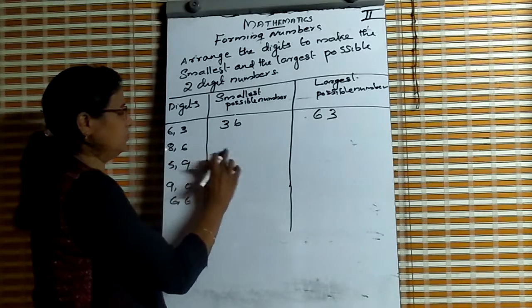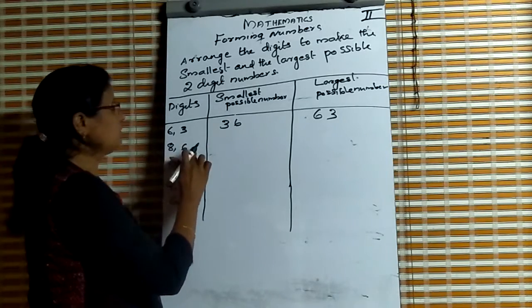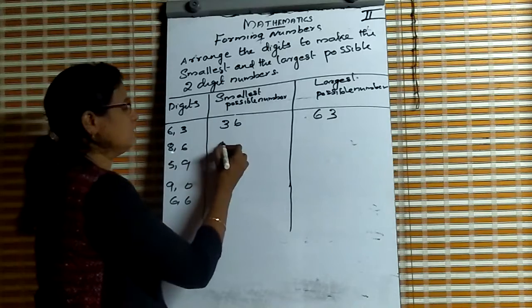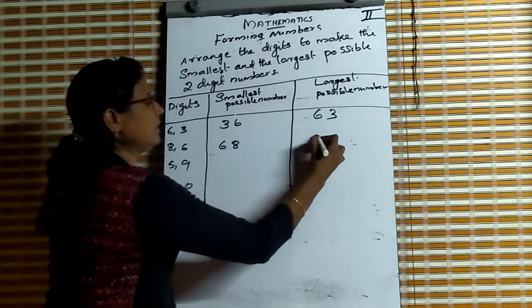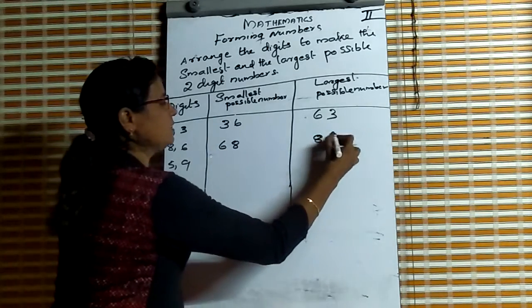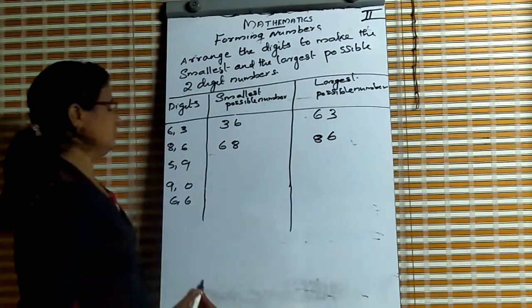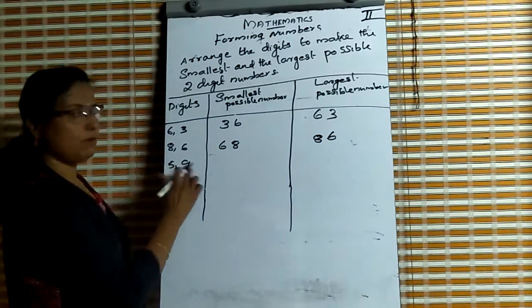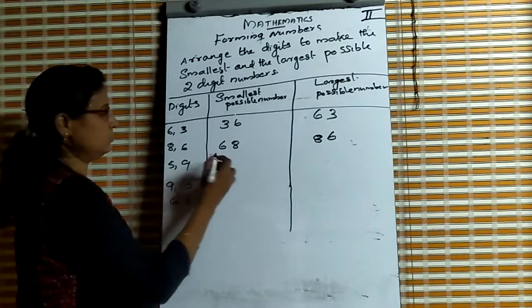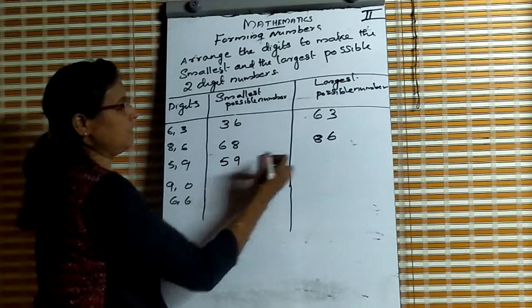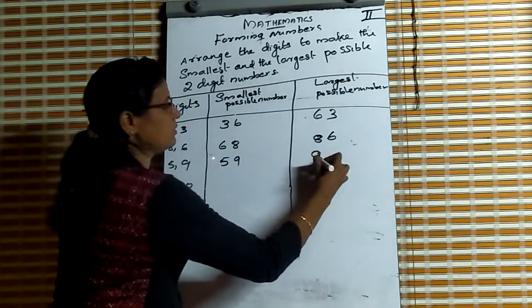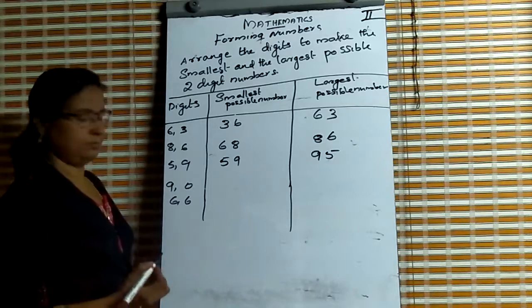Using digits 5 and 9: smallest is 59 and greatest is 95.